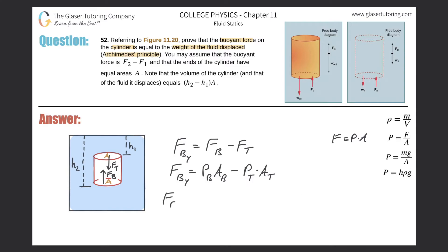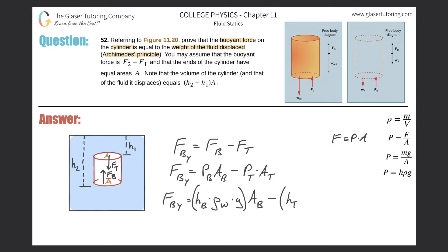Substituting the pressure-height relationship, the buoyant force equals H sub 2 — the height of the bottom of the cylinder relative to the water surface — times the density of the water times gravity times the area, minus H sub 1 — the height at the top — times the density of the water times gravity times the area.